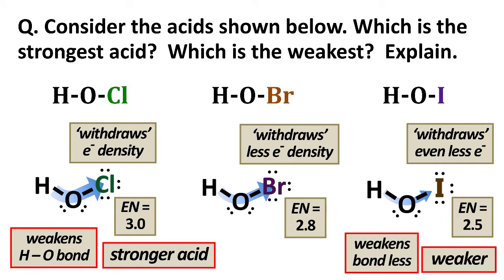So we can rationalize the trend in bond strength, leading to a trend in acid strength. And weaker bond means stronger acid. And it has to do with the electronegativity, relatively speaking, of chlorine, bromine, and iodine.